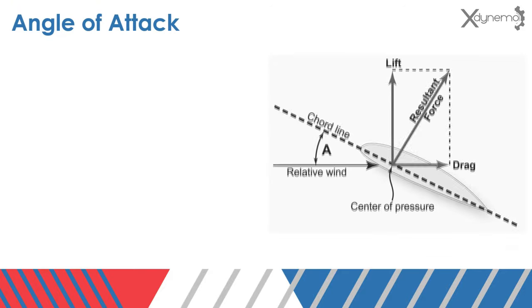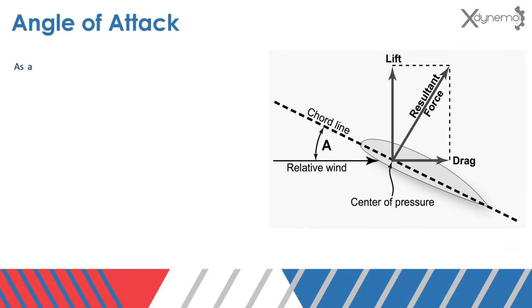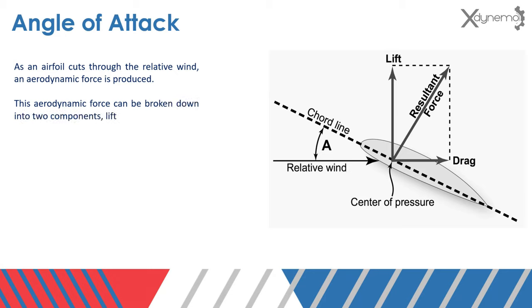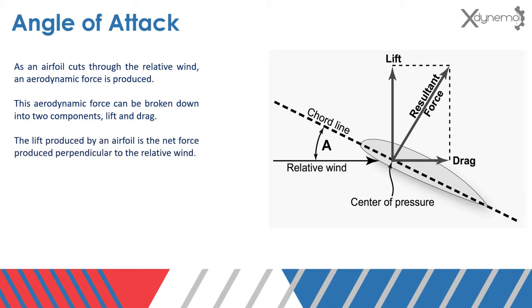Angle of attack. As an airfoil cuts through the relative wind, an aerodynamic force is produced. This aerodynamic force can be broken down into two components: lift and drag. The lift produced by an airfoil is the net force produced perpendicular to the relative wind. The drag incurred by an airfoil is the net force produced parallel to the relative wind.